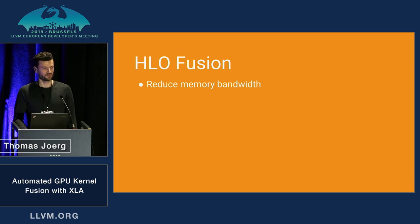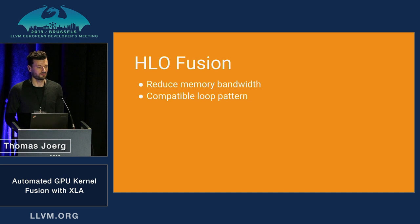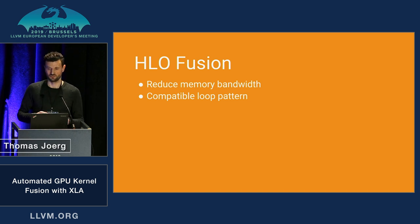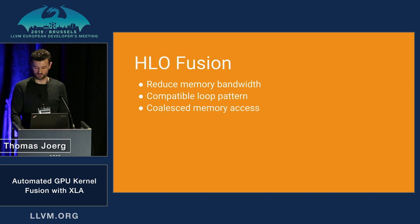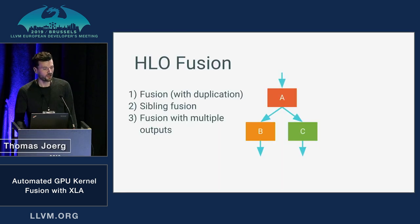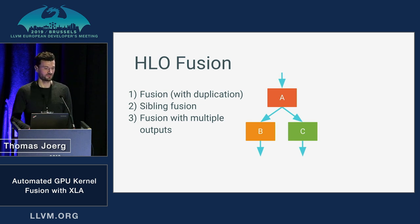We're operating under certain constraints. For ops to reasonably be code-genned together, you need them to be a good fit for the same CUDA launch grid, so the loop patterns should match up. We also want to make sure that memory access is coalesced, because if it isn't, we're going to make poor use of our memory bandwidth. At the HLO level, you can think of fusion as a graph transformation where you carve out interesting subgraphs for code generation.